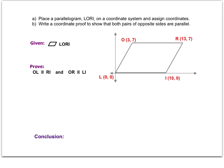That means I'm trying to show that segment OL is parallel to segment RI — the parallel symbol is those two vertical lines — so OL is parallel to RI. And at the same time, the other pair of opposite sides, OR is parallel to LI. We need to show and prove that both of those pairs are parallel in order to complete this problem.